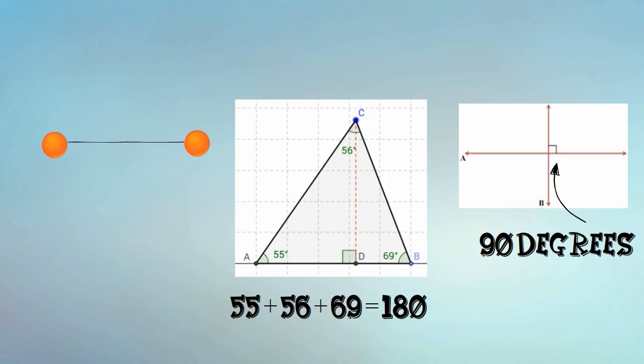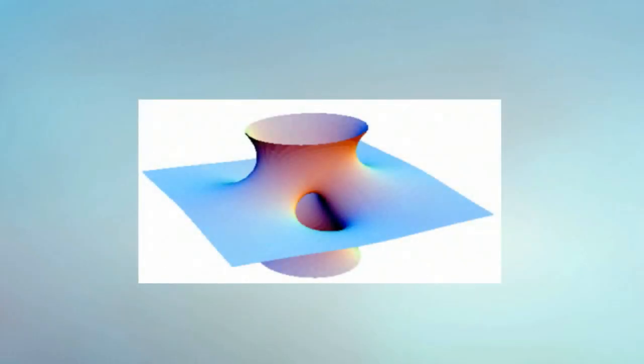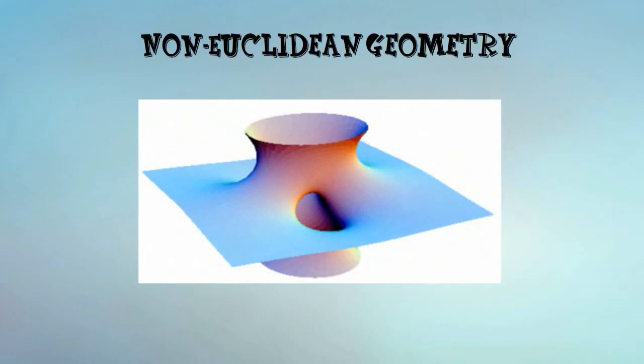Euclidean Geometry cannot describe all physical space such as curved space. Non-Euclidean Geometry describes curved space.